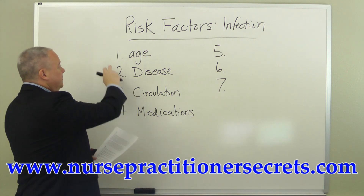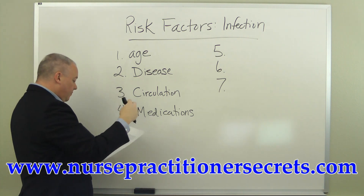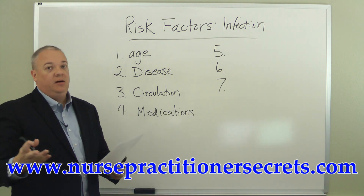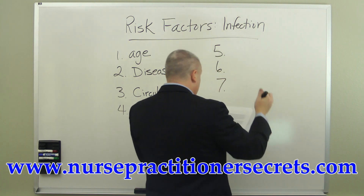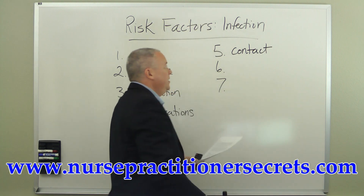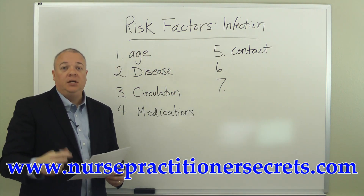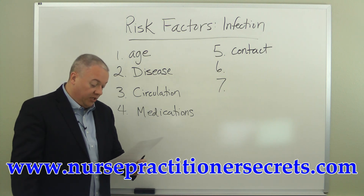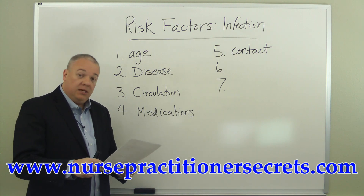So remember: young and old, certain diseases, circulatory inefficiency or impairment, particular medications such as immunosuppressants, chemotherapy, or abuse of antibiotics. And then fifth, we want to talk about contact — basically being in close proximity to someone with a particular infection increases the risk of getting that infection. Close contact with a source of microorganisms is a significant risk factor.